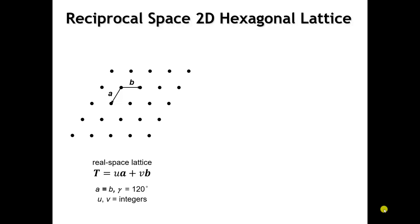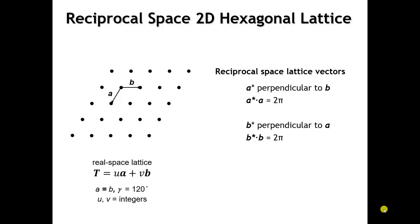I show here on the left our real space lattice. Remember that the vectors a and b are equal in length to each other, and the angle between them is 120 degrees. The a-star vector must be perpendicular to b, so we see that a-star is going to go vertically down in our drawing. And the b-star vector is going to be perpendicular to a, off at that angle.